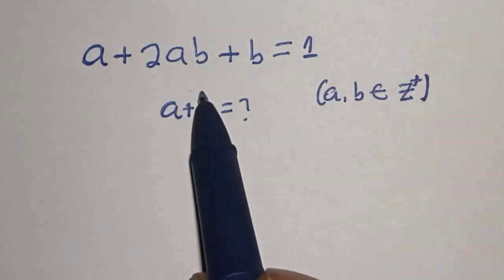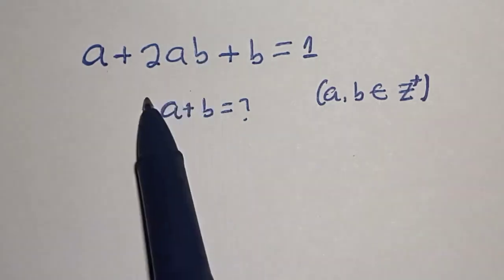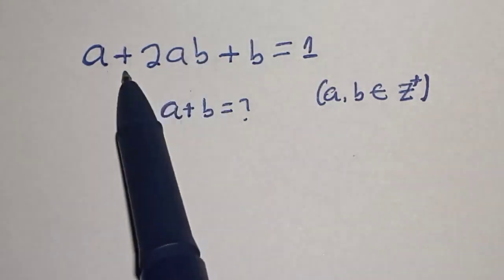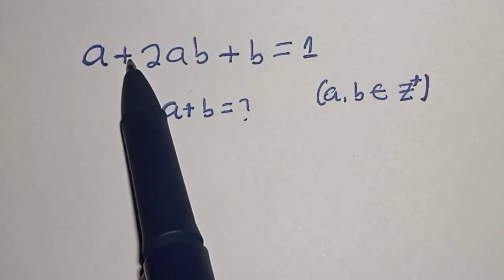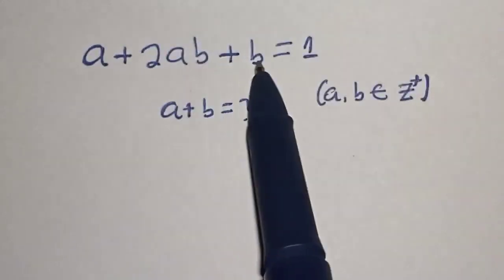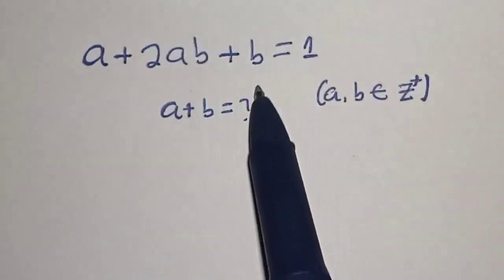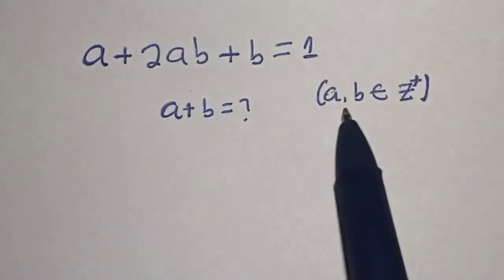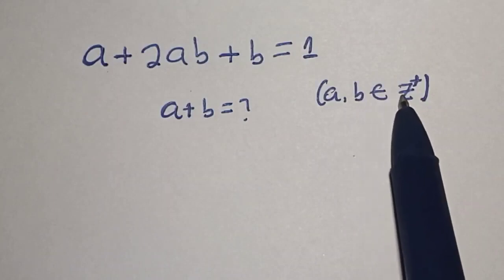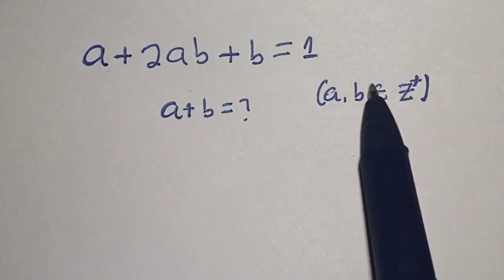Hello, welcome to Magist. In this class, we want to find the value of a plus b from the equation a plus 2ab plus b is equal to 1, where a and b are members of the positive integers.